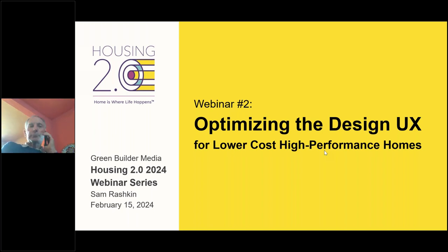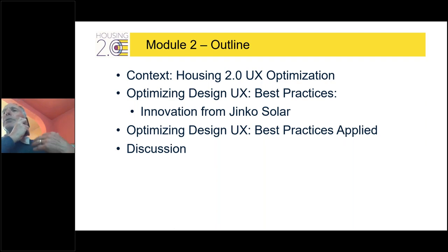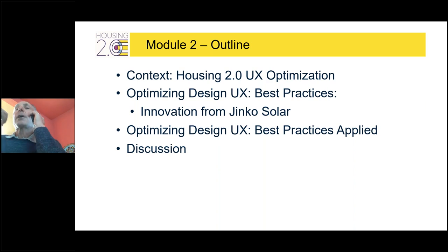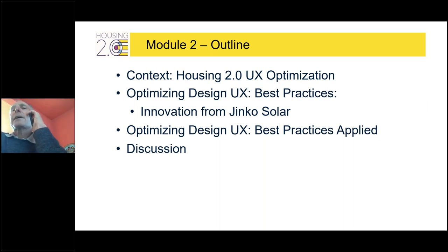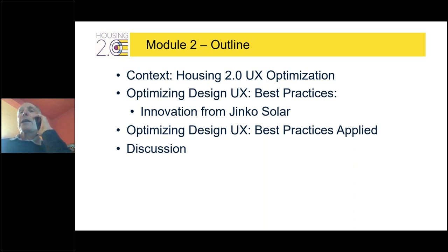What we will cover today: first, a context — Housing 2.0 provides a user experience optimization process and strategy that is critical for all high-performance homebuilders. We have to do better with less. Then we'll jump into optimizing the design user experience and best practices, introduce JNCO Solar in the middle, then wrap up best practices and show how the numbers add up to pretty substantial figures.